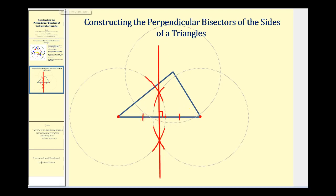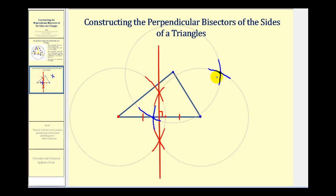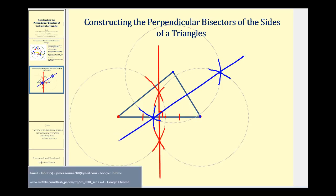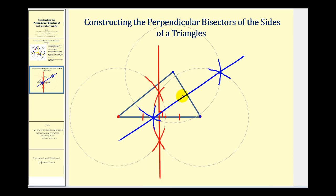Leaving the radius the same, let's bisect this shorter side. We'll put the point of the compass here and swing an arc to the left and right of this side. The two arcs might look something like this. Then we'll put the point of the compass at the other vertex and do the same — swing an arc to the right and swing an arc to the left. The intersection points of these arcs will be on our perpendicular bisector. Again, we have a right angle here and two congruent segments.